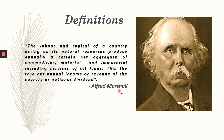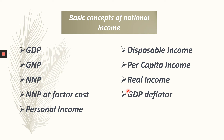What are the basic concepts of national income? Under this we have GDP (gross domestic product), GNP (gross national product), NNP (net national product), NNP at factor cost (net national product at factor cost), personal income, disposable income, per capita income, real income, and GDP deflator. These are the basic concepts of national income.